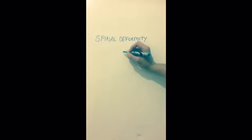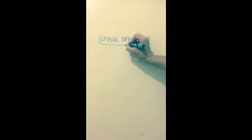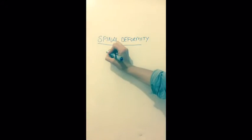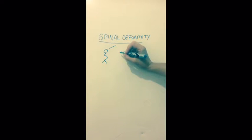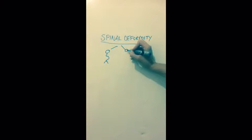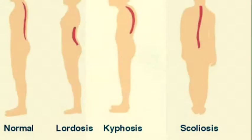General non-traumatic spinal deformities may either be a kyphosis, where there is increased forward bending of the spine, or a scoliosis, where there is lateral curvature of the spine.